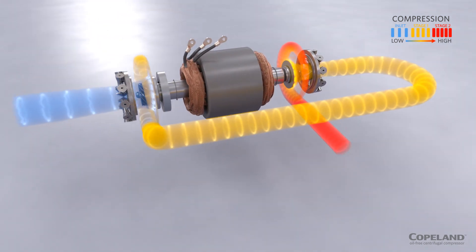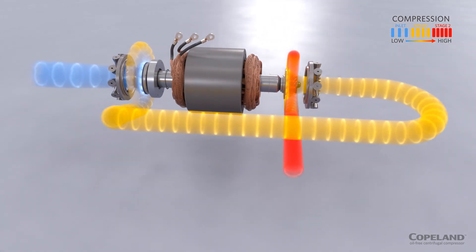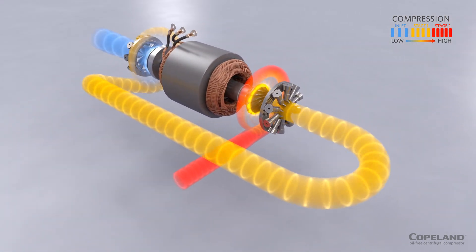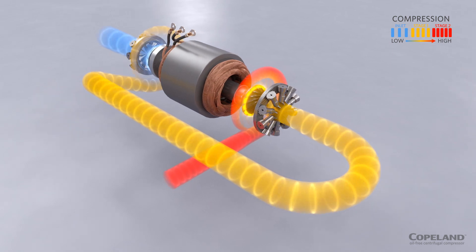As the impeller moves and energizes the refrigerant gas, the gas begins to flow through the interstage piping and onto the second-stage impeller where the process is repeated and the refrigerant is discharged from the compressor.